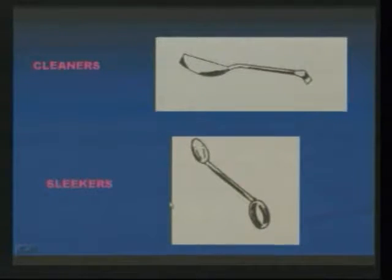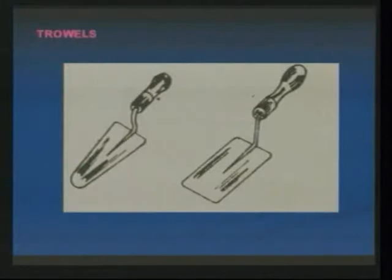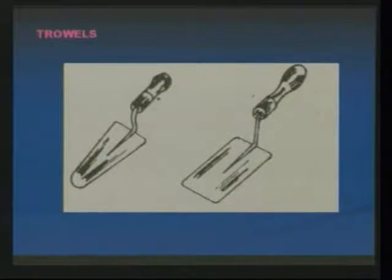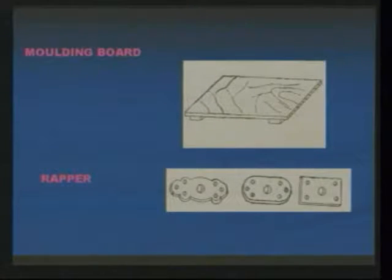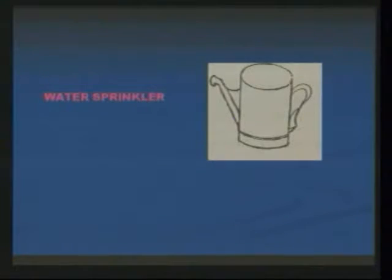The cleaners and sleekers are also tools used in the preparation of molds for cleaning and removing small sand from the mold cavity. This figure shows the trowel which is used for finishing of the prepared mold. Next one is molding board and wrapper. The molding board is a flat board used for keeping the flasks over that molding board. The water sprinkler is used for pouring water, adding some water content to the molding sand.